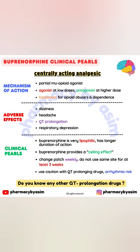Buprenorphine is a partial opioid agonist. It is an agonist at low doses and an antagonist at higher doses. Buprenorphine is used for treatment of opioid abuse and opioid dependence.